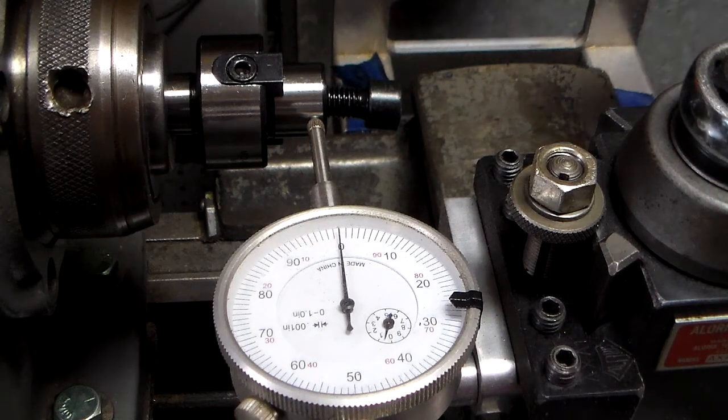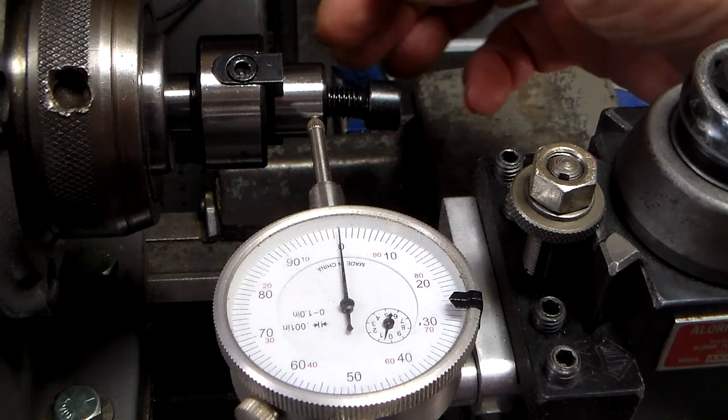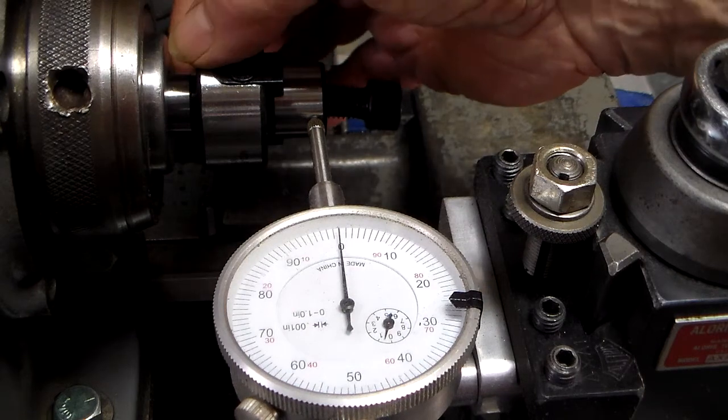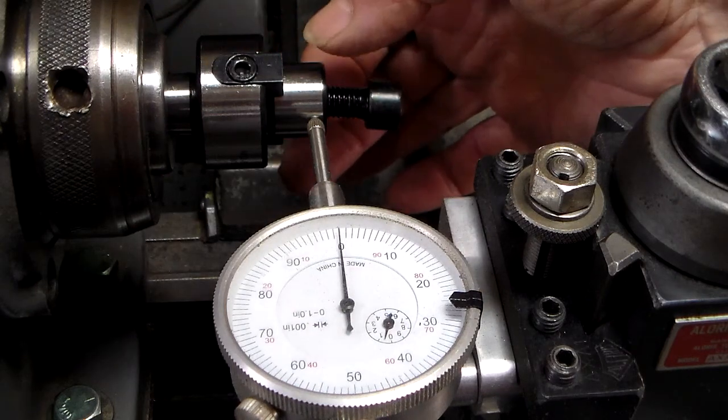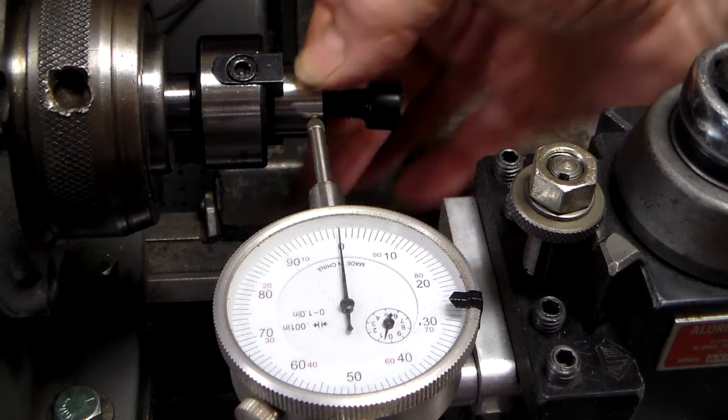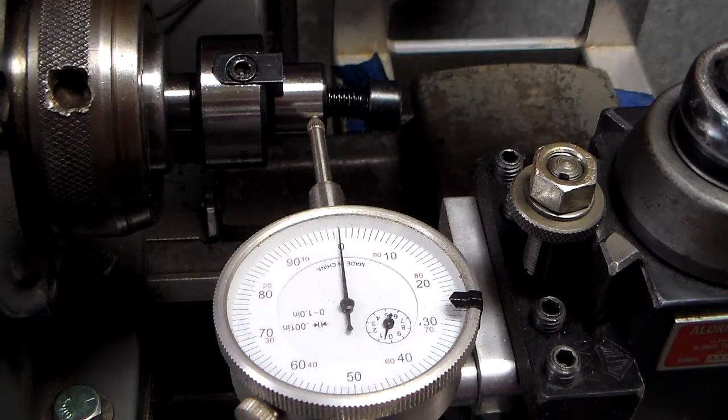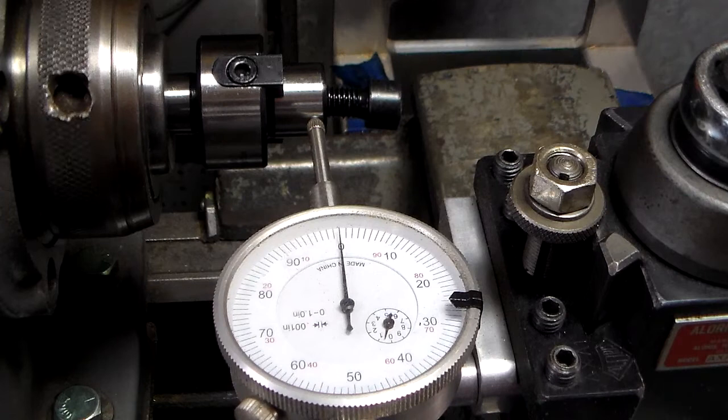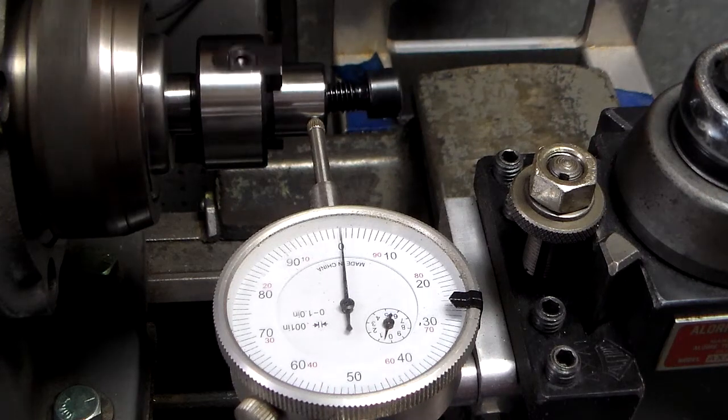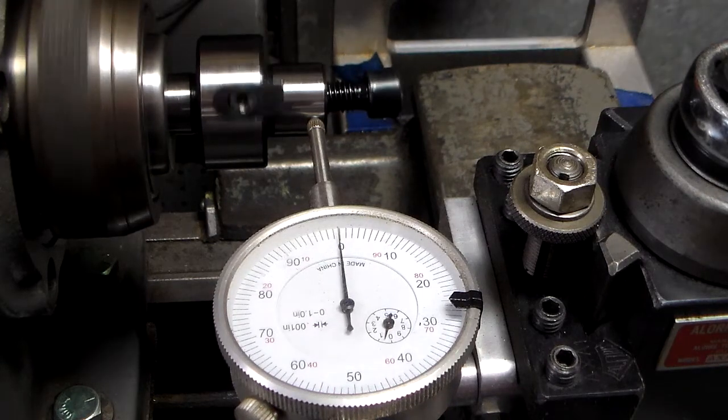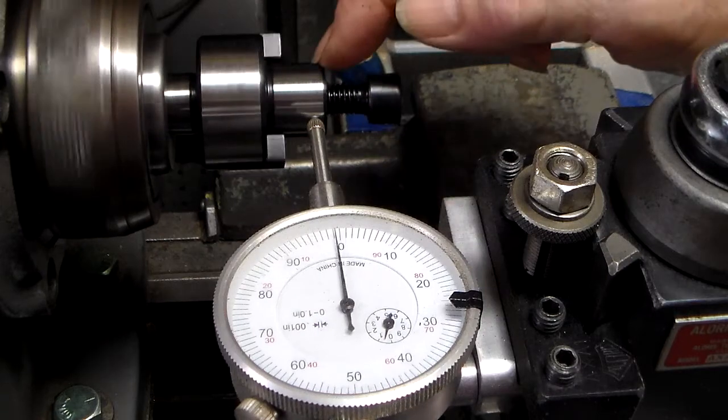So what my problem here is, is that the actual number two Morris taper, and where the arbor mounts, this arbor runs almost perfect. As you'll see here, you can barely see that, we're talking about one-thousandths run out here.